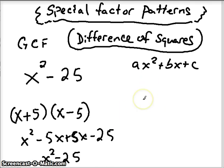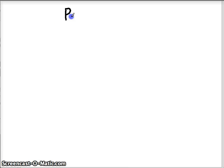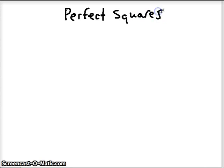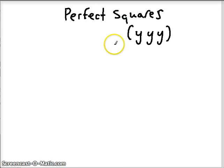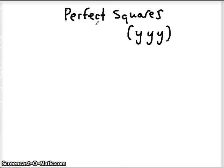There is one more special pattern. This next pattern is called perfect squares. We're going to ask ourselves three questions here. Sometimes we'll call it the YYY method, because we need to answer yes to all three questions. If we can answer yes to these three questions, we're going to recognize that we have a pattern using perfect squares.